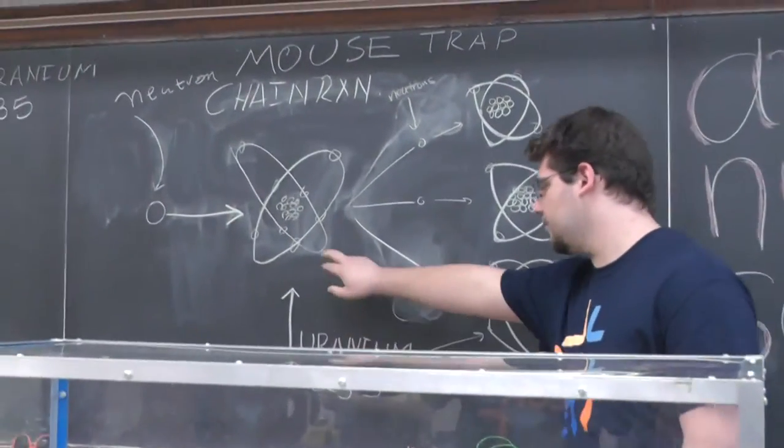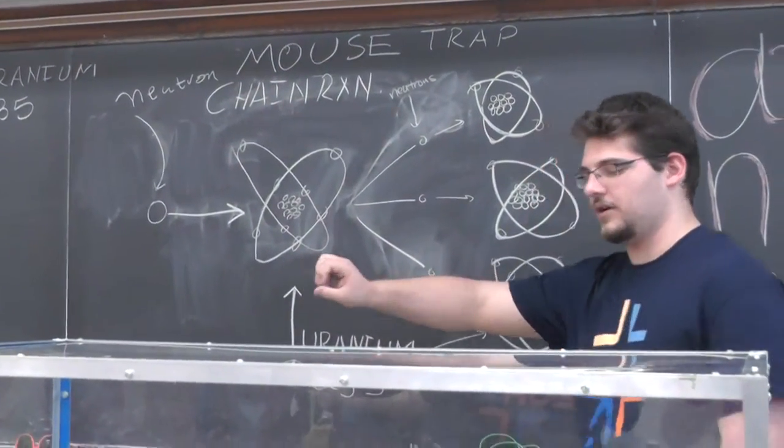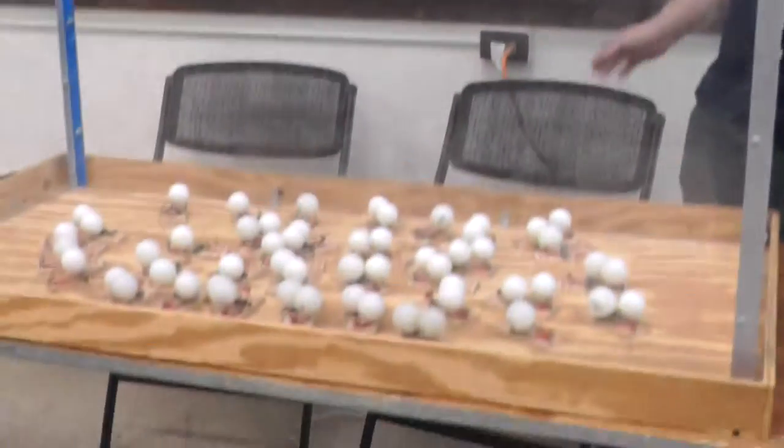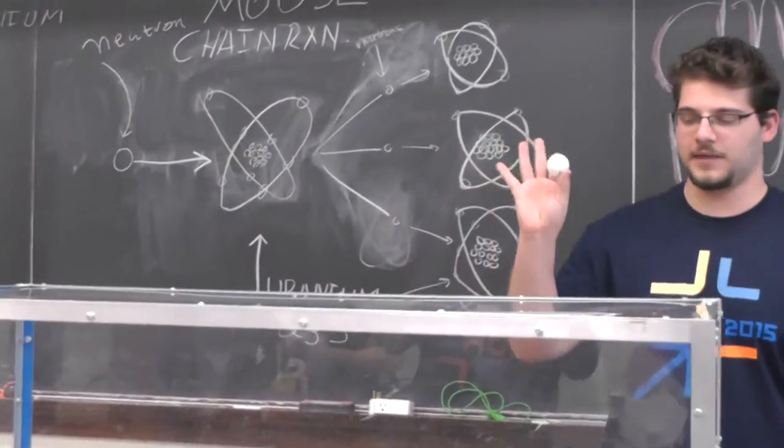What we have is unstable uranium-235 atoms, which are symbolized by the mousetrap, and we have neutrons which are symbolized by the ping pong balls.